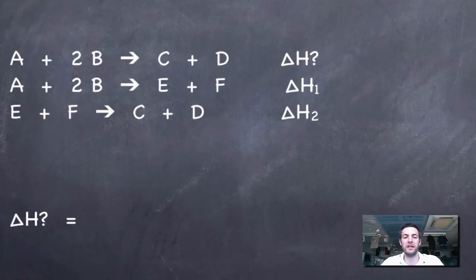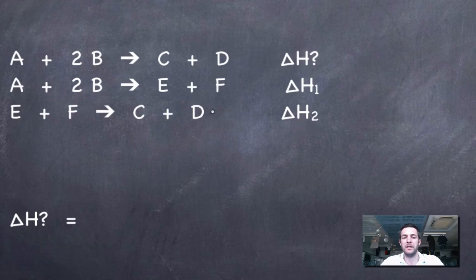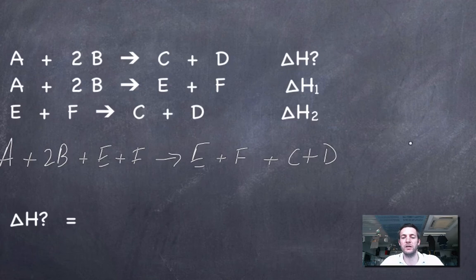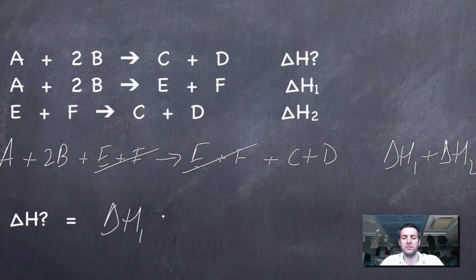We want to find the enthalpy change for A + 2B → C + D. I know the enthalpy change for A + 2B → E + F, and I know the enthalpy change for E + F → C + D. If I add these two equations together, I get A + 2B + E + F → E + F + C + D. Adding the two enthalpy changes gives delta H1 plus delta H2. I can cancel E and F from both sides, leaving A + 2B → C + D. So the unknown enthalpy change is simply delta H1 plus delta H2.